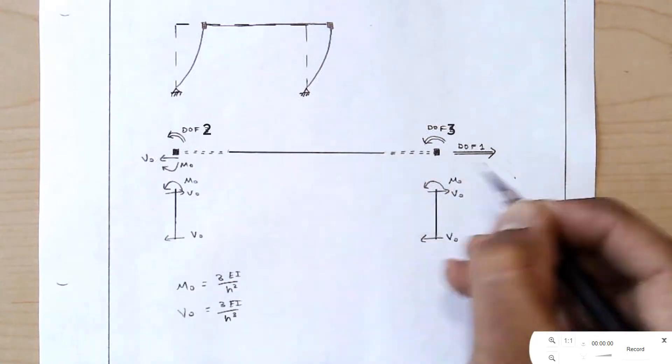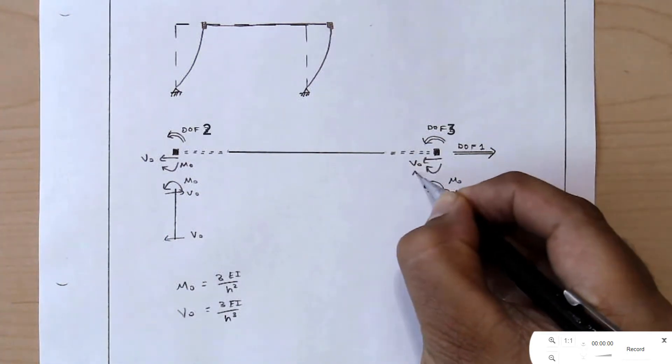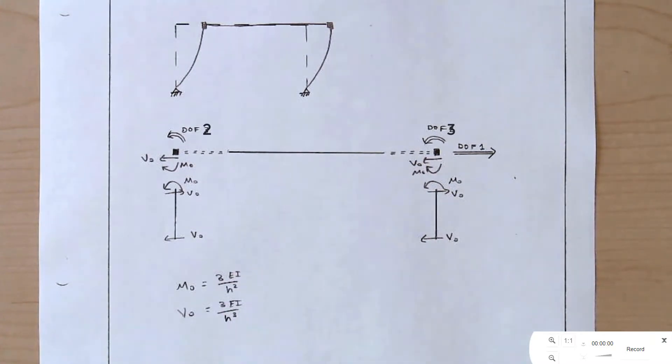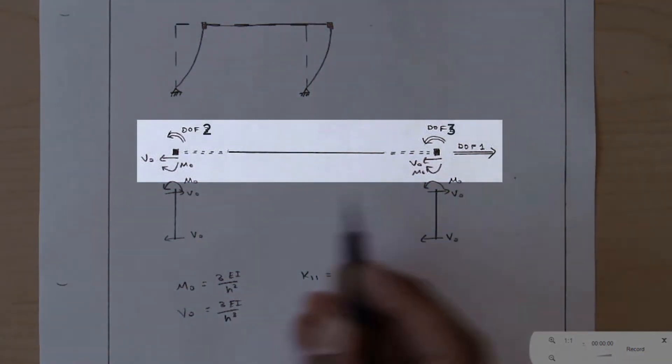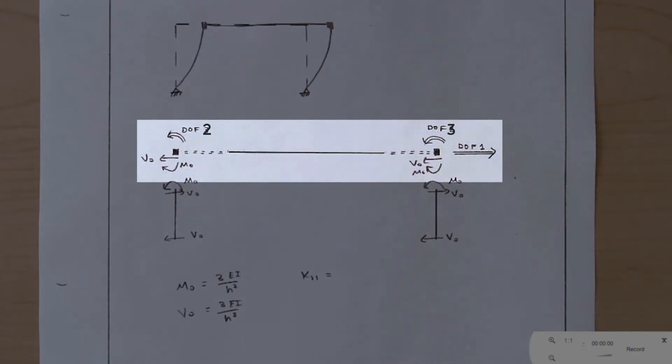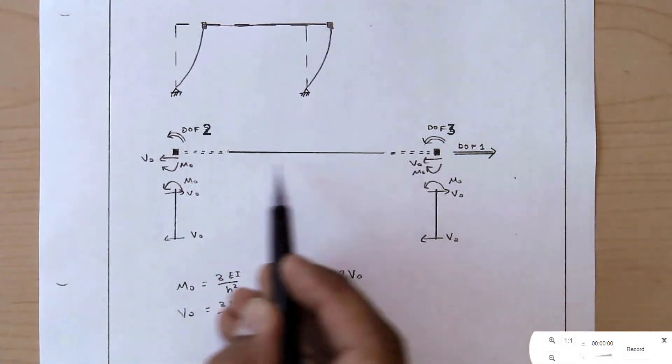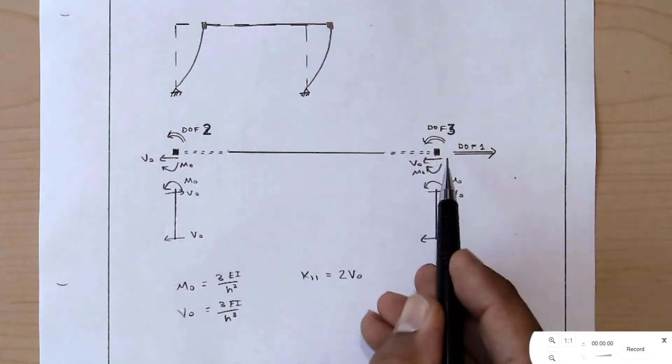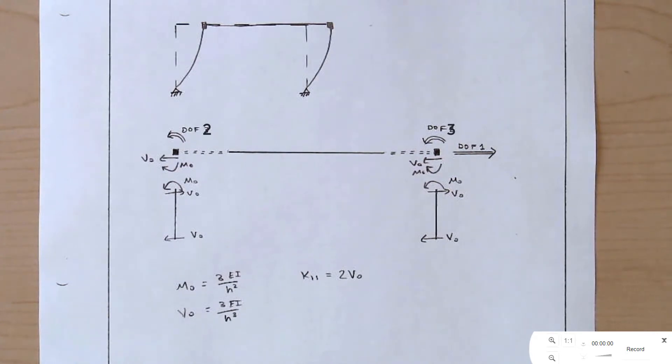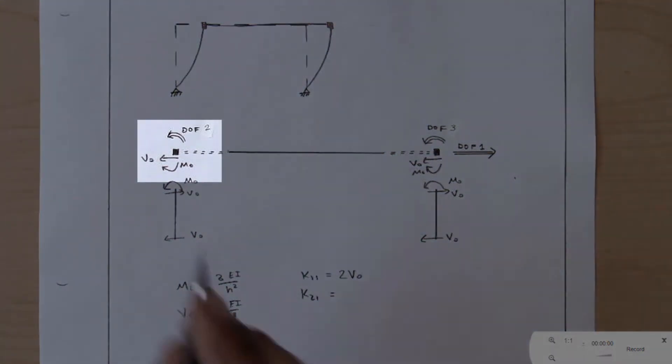Our next task is going to be to react these forces equal and opposite onto the nodes above. V0 and M0, and V0 and M0 over here. Now we're ready to establish three elements of this stiffness matrix. Remember that Kij is the force at degree of freedom i due to a unit displacement at degree of freedom j. So K11 is the force along degree of freedom 1 due to this displacement at degree of freedom 1. And I'm picking up two V0s here. Remember that due to the axial rigidity of this member, these two nodes are connected to each other.